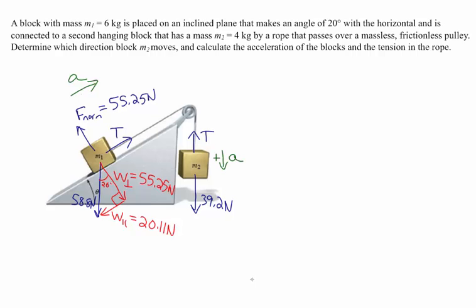We compare the parallel component of the weight pulling one direction versus the weight of M2 pulling the other direction. M1 accelerates up the ramp and M2 accelerates down, so I'm going to make the positive direction for each object the direction of its acceleration. This is not what some people would have expected — because M2 was lighter, they might have thought it would move up. But much of M1's weight is balanced out by the ramp, leaving only a small force pulling M1 down. Now we solve this like other connected object problems, looking at individual forces on each object.